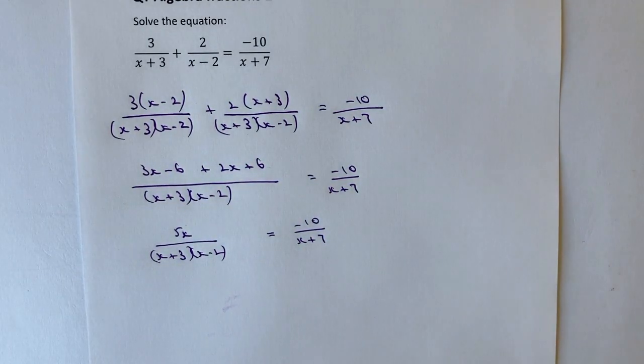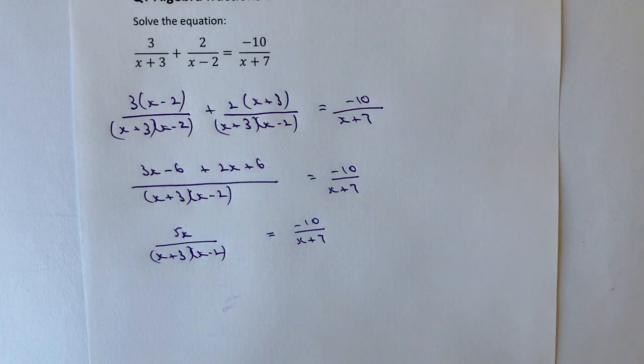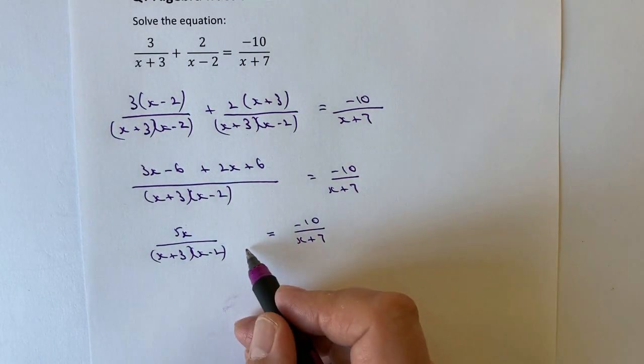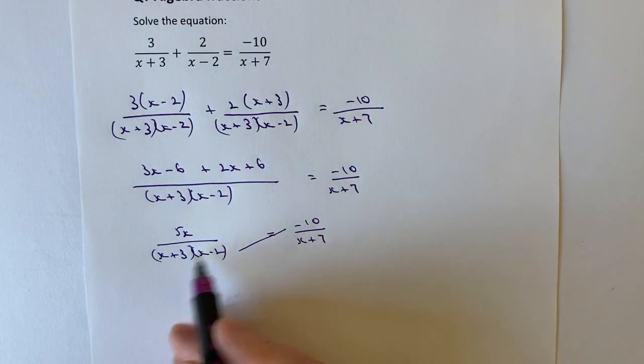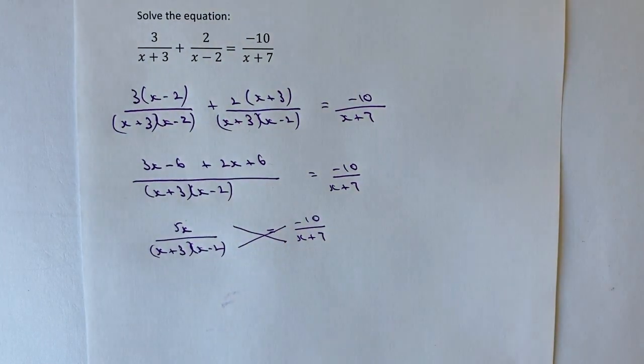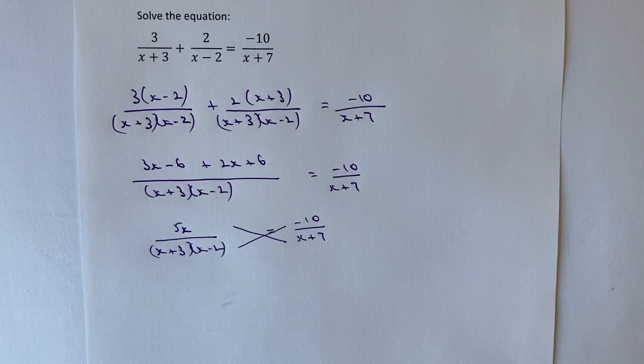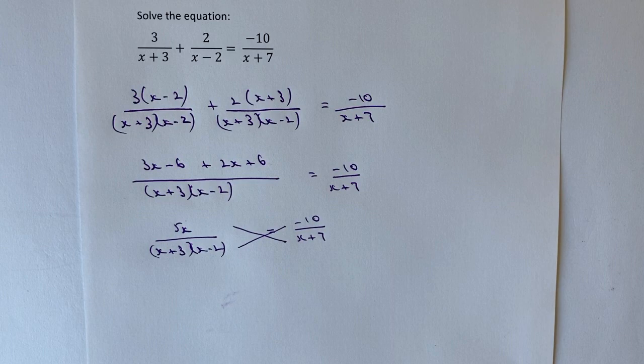This is where you need to have this technique where we cross multiply. What we're actually saying is that I can multiply through by that. So minus 10 times (x+3)(x-2), and also (x+7) times 5x. Now if you're not familiar with that technique, it is worthwhile just seeing how that works. Unfortunately, it's beyond the scope of this particular video, but do have a look on the playlist with other examples, and that will give you some reasons as to why we can do this.